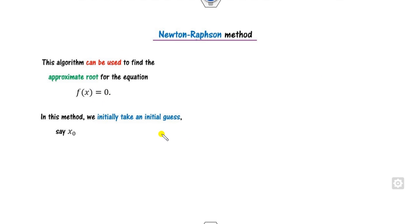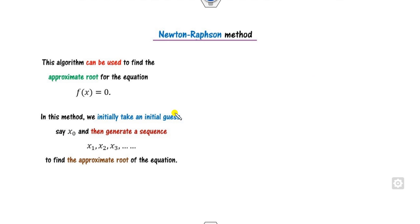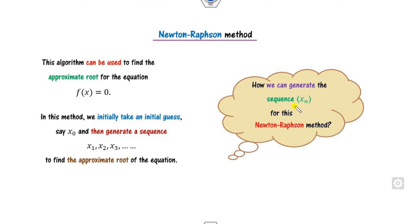In this method, you start with the initial guess x₀. You can take any x₀ in the interval I, the interval in which the root lies, and then we generate the new sequence x₁, x₂, and so on using x₀. But the question arises: how can we generate this sequence xₙ for the Newton-Raphson method?